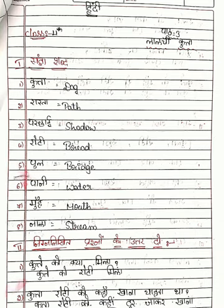Roti — Bread. B-R-E-A-D. Bread. Fool — Bridge. B-R-I-D-G-E. Bridge.